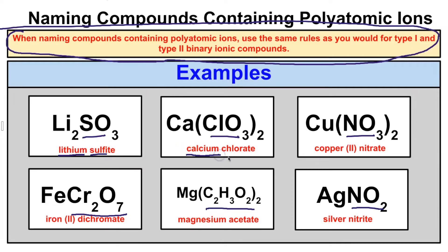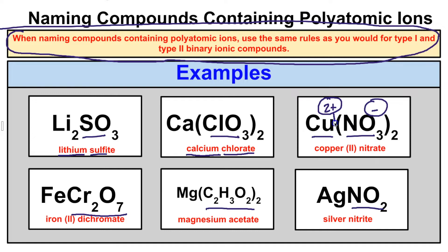Copper is a Type 2 metal from the transition metals, so we have to figure out the charge of the copper ion. Nitrate has a 1- charge; two nitrates gives 2-. With only one copper, it must have a 2+ charge. Remember, ionic charges must always add up to zero, which is achieved by adding subscripts. So we name this copper(II) nitrate, putting a Roman numeral in parentheses to indicate the charge.